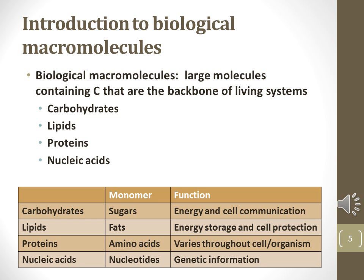The four types of biological organic molecules are carbohydrates, lipids, proteins, and nucleic acids. Each molecule has a different type of monomer. Carbohydrates are monosaccharides. Lipids are glycerol and fatty acids combined. Proteins are amino acids. And nucleic acids are nucleotides.